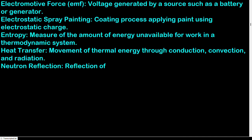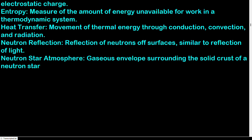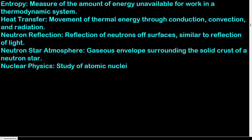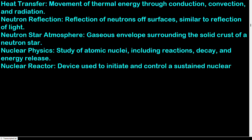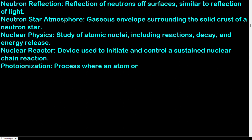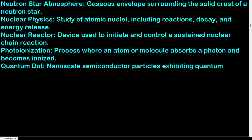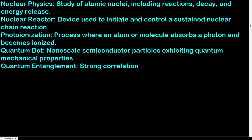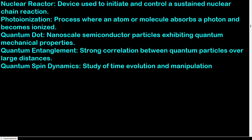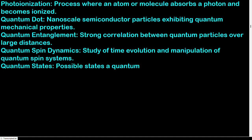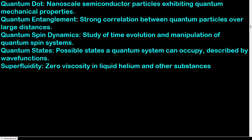Heat transfer: movement of thermal energy through conduction, convection, and radiation. Neutron reflection: reflection of neutrons off surfaces, similar to reflection of light. Neutron star atmosphere: gaseous envelope surrounding the solid crust of a neutron star. Nuclear physics: study of atomic nuclei including reactions, decay, and energy release. Nuclear reactor: device used to initiate and control a sustained nuclear chain reaction. Photo ionization: process where an atom or molecule absorbs a photon and becomes ionized. Quantum dot: nanoscale semiconductor particles exhibiting quantum mechanical properties. Quantum entanglement: strong correlation between quantum particles over large distances. Quantum spin dynamics: study of time evolution and manipulation of quantum spin systems. Superfluidity: zero viscosity in liquid helium and other substances at low temperatures.